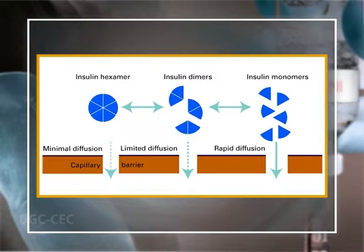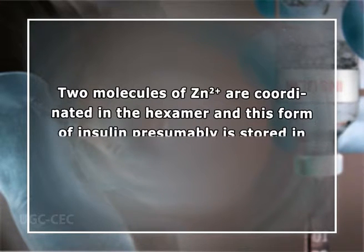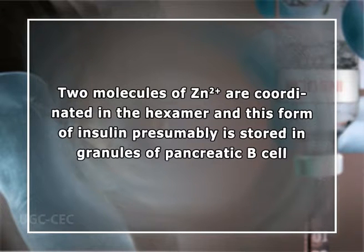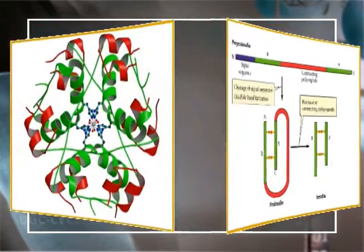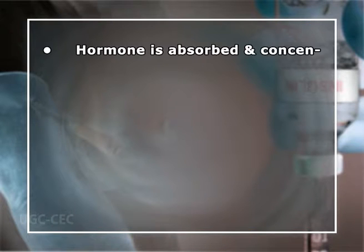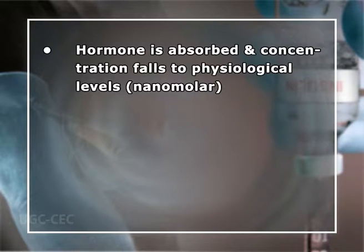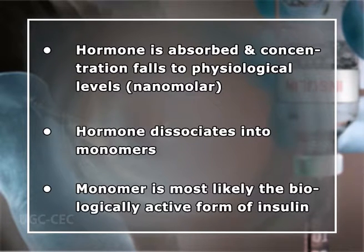The crystal structure reveals that the two chains of insulin form a highly ordered structure with a helical region in each chain. The isolated chains are inactive. In solution, insulin can exist as a monomer, dimer, or hexamer. Two molecules of zinc ions are coordinated in the hexamer, which is presumably stored in the granules of the pancreatic B cell. Zinc ions have a functional role in hexamer formation, facilitating conversion of pro-insulin to insulin. Traditional insulin is hexameric in concentrated preparations; when absorbed and concentration falls to nanomolar physiological levels, the hormone dissociates into monomers — the biologically active form.